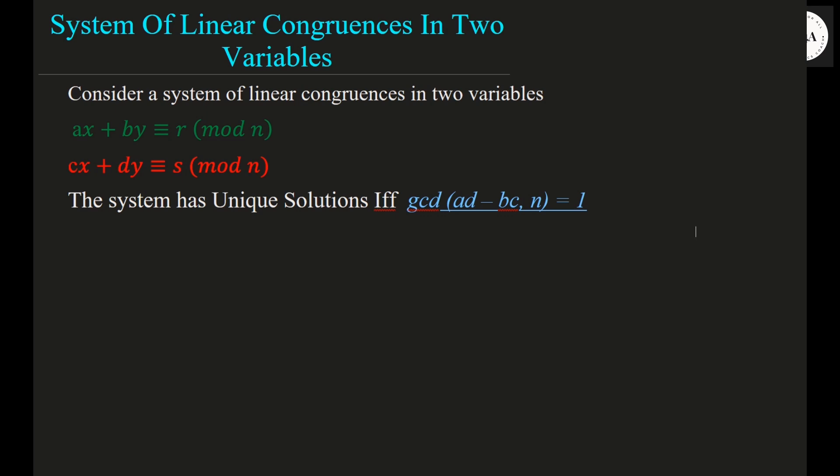What is the statement for two variables? Consider system of linear congruences in two variables: ax plus by congruent to r mod n, and cx plus dy congruent to s mod n. If these are two equations in linear congruences, then this system has a unique solution if and only if gcd of (ad minus bc, n) is equal to 1.